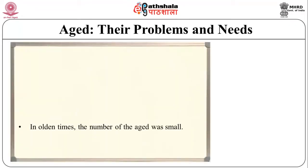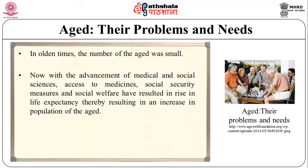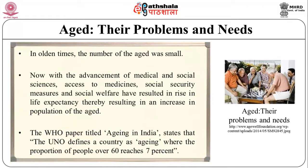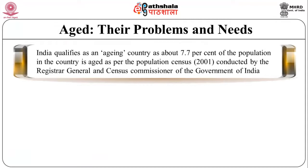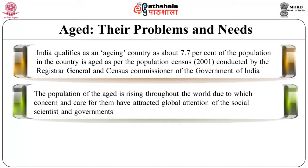In older times the number of the aged was small. With advancements in medical and social sciences, access to medicines, social security measures, and social welfare have resulted in a rise in life expectancy, increasing the aged population. The WHO paper titled 'Aging in India' stated that the UN defines a country as aging when the population of people over 60 years reaches 7%. India qualifies, with about 7.7% of its population aged, as per the 2011 census.